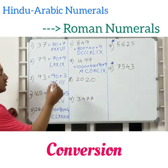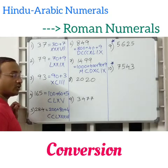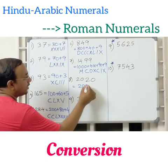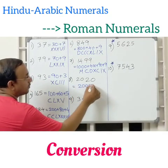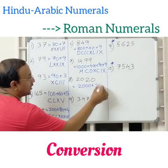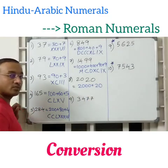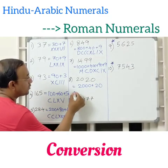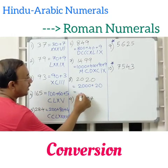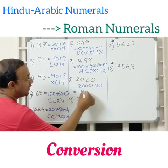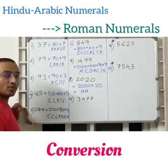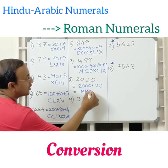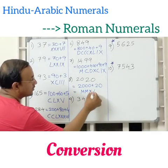Next, 2020. Let us write the expanded form: 2000 plus 20. So 2000 is nothing but MM, and then 20 is nothing but XX.